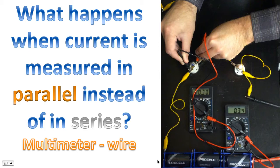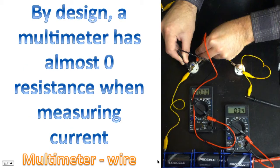This is the exact same experiment I just showed you, except we've replaced the wire with the multimeter. By design, a multimeter has almost zero resistance when measuring current. So effectively, the multimeter is behaving the exact same way a wire would behave.